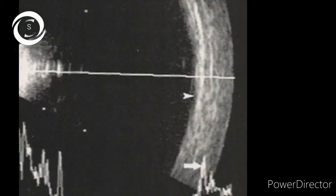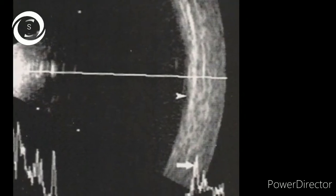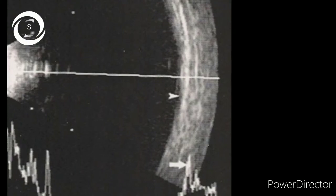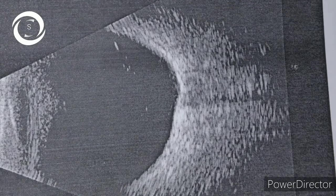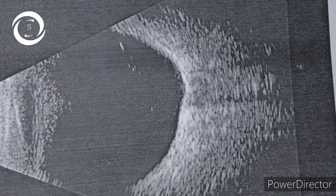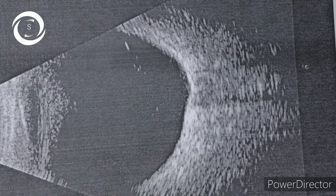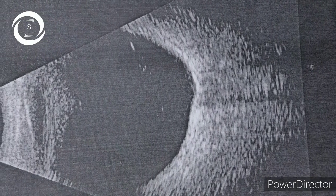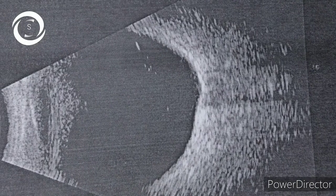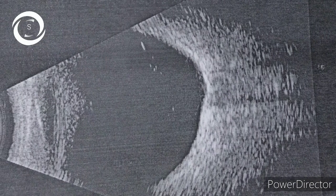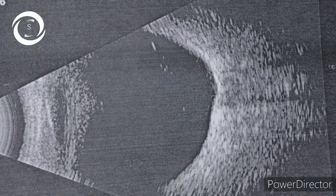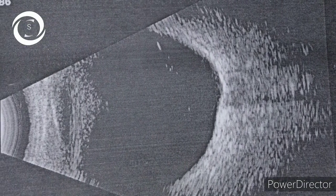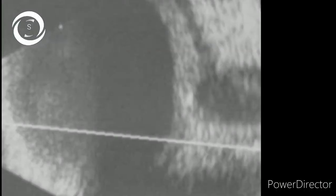Here again we see an enlarged eyeball. Look at the contour of the retina — there is a depression and discontinuity. This is the B scan of posterior staphyloma in a high myopic patient.